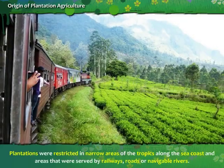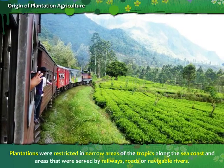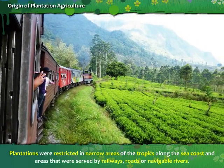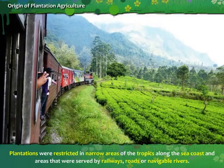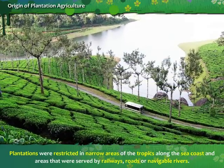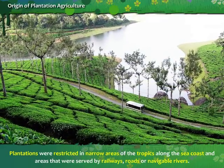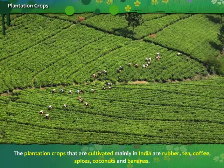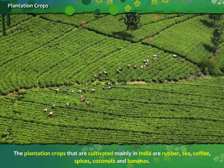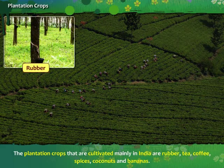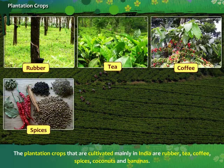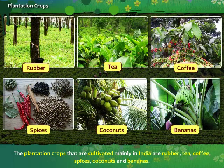Plantations were restricted to narrow areas of the tropics along the seacoast, and areas that were served by railways, roads or navigable rivers. The plantation crops cultivated mainly in India are rubber, tea, coffee, spices, coconuts and bananas.